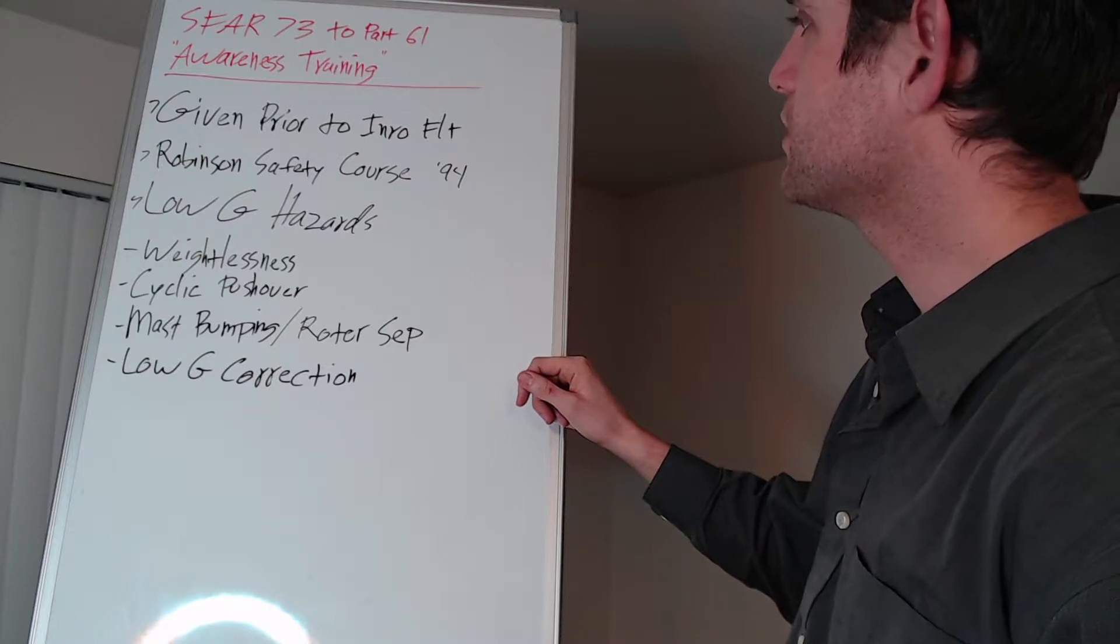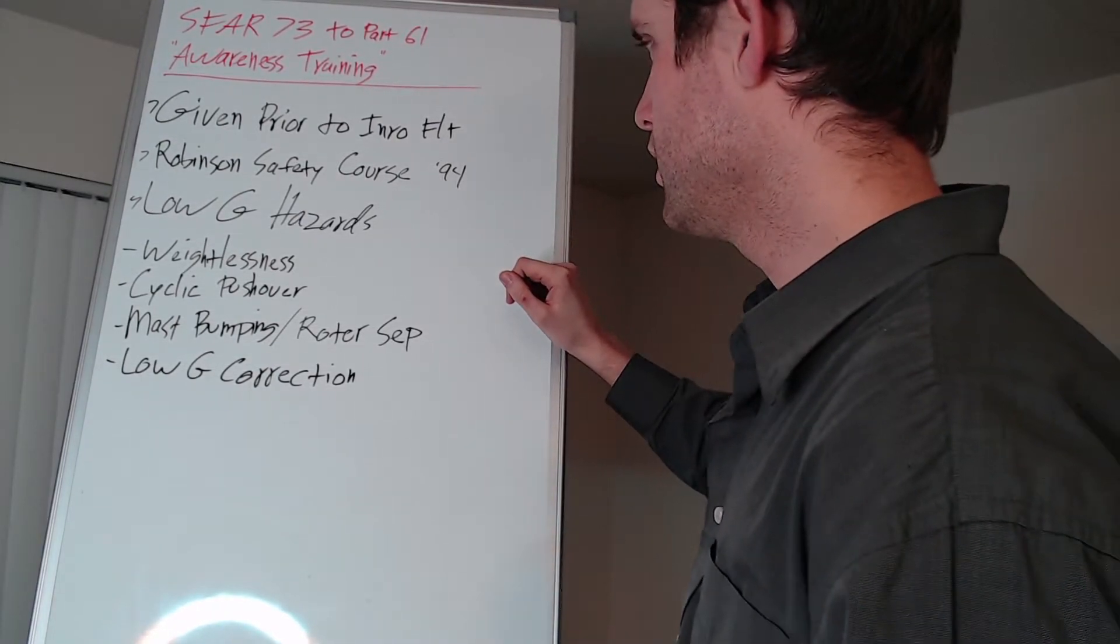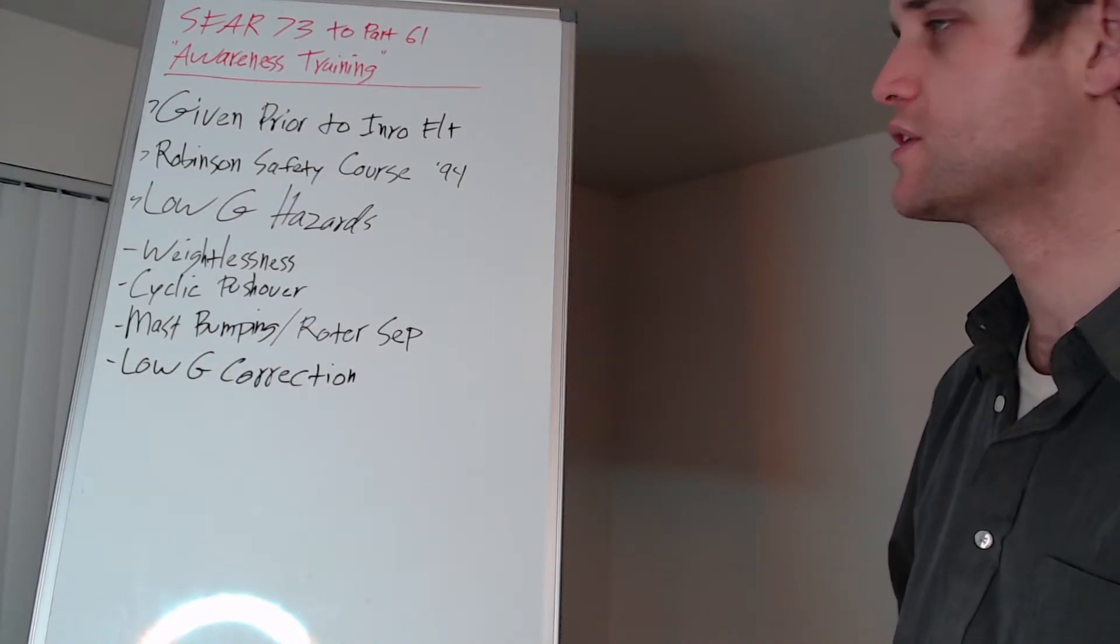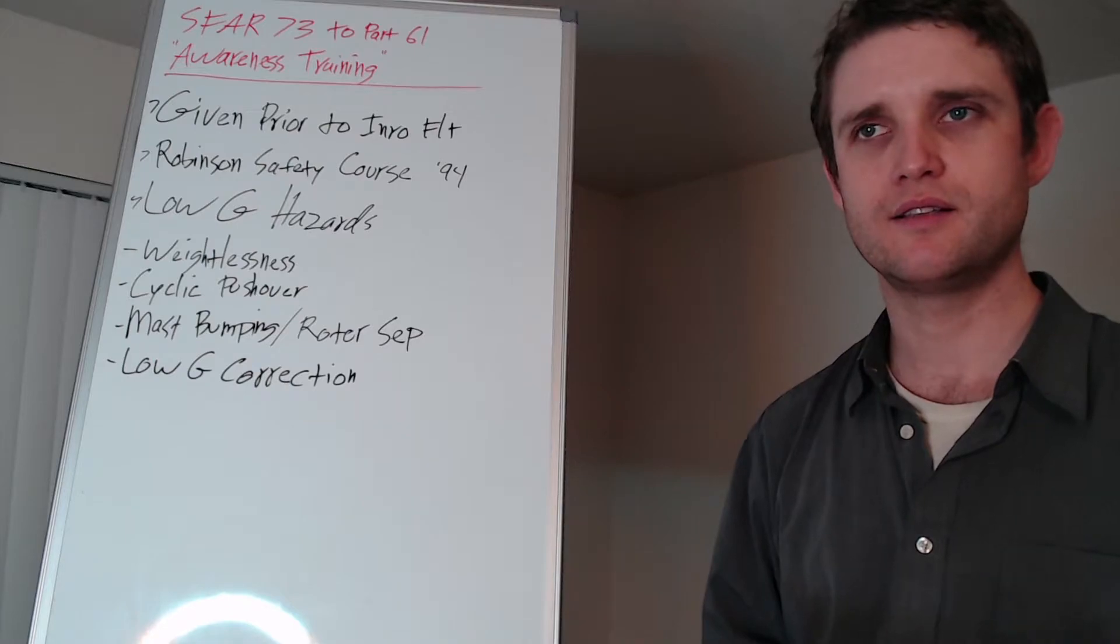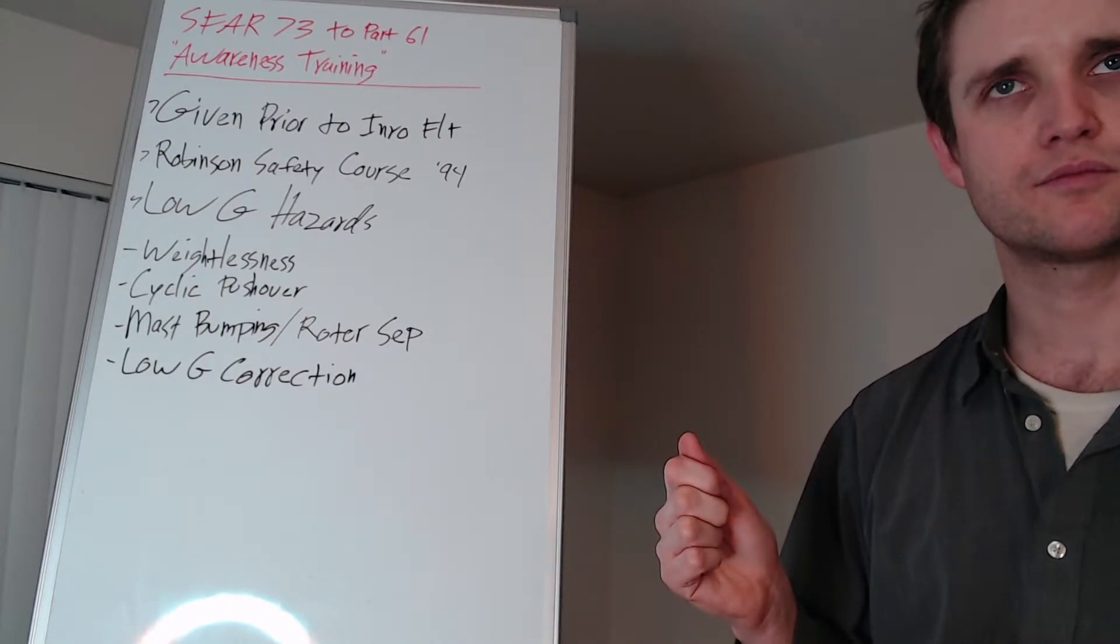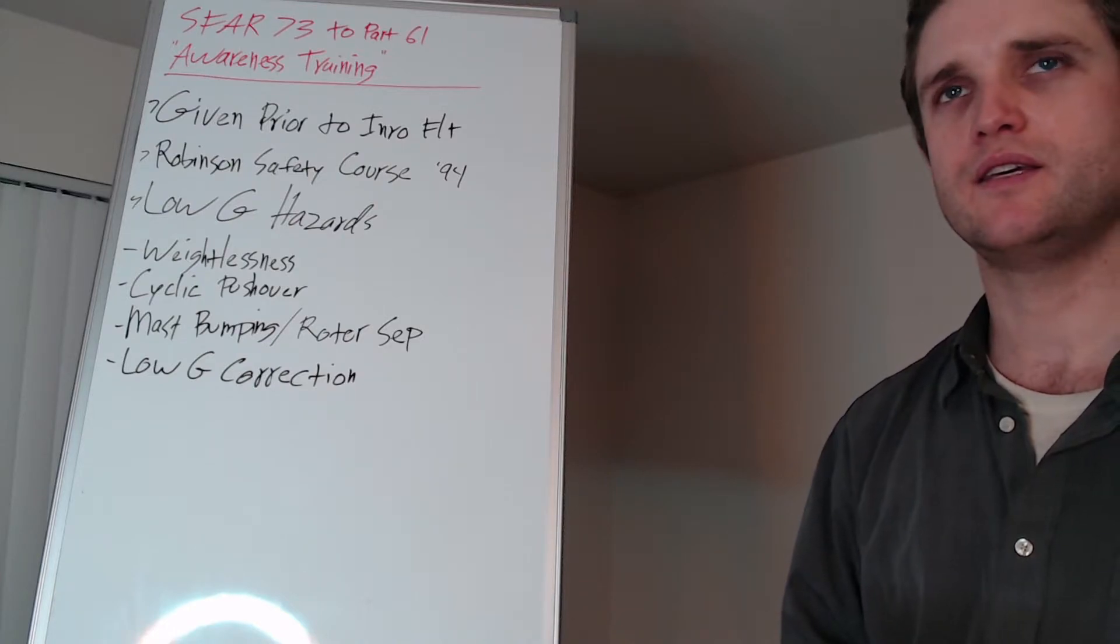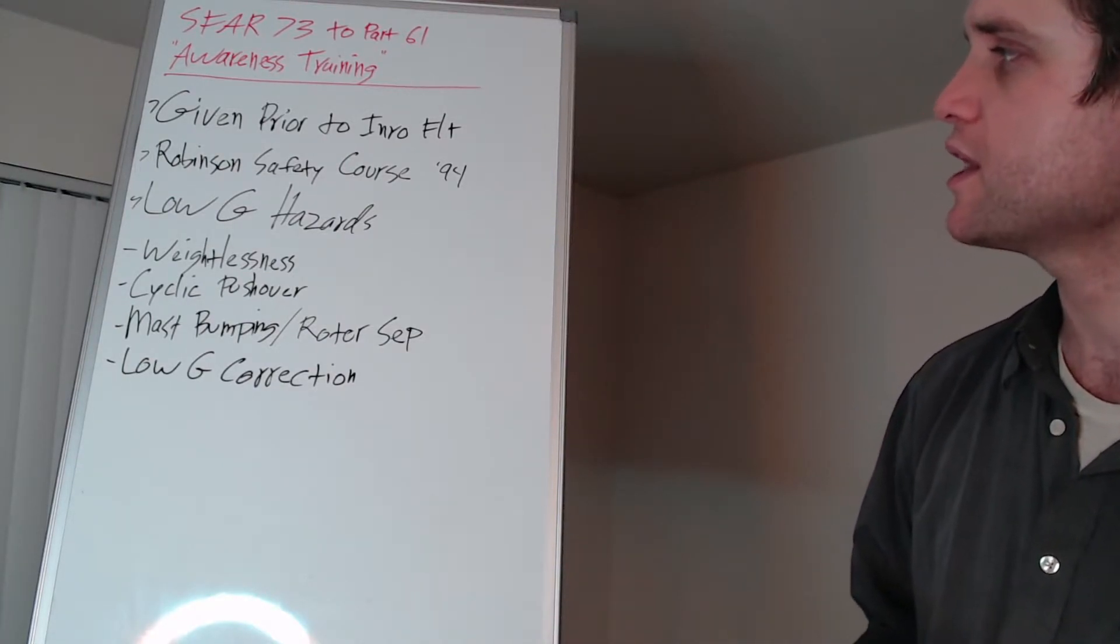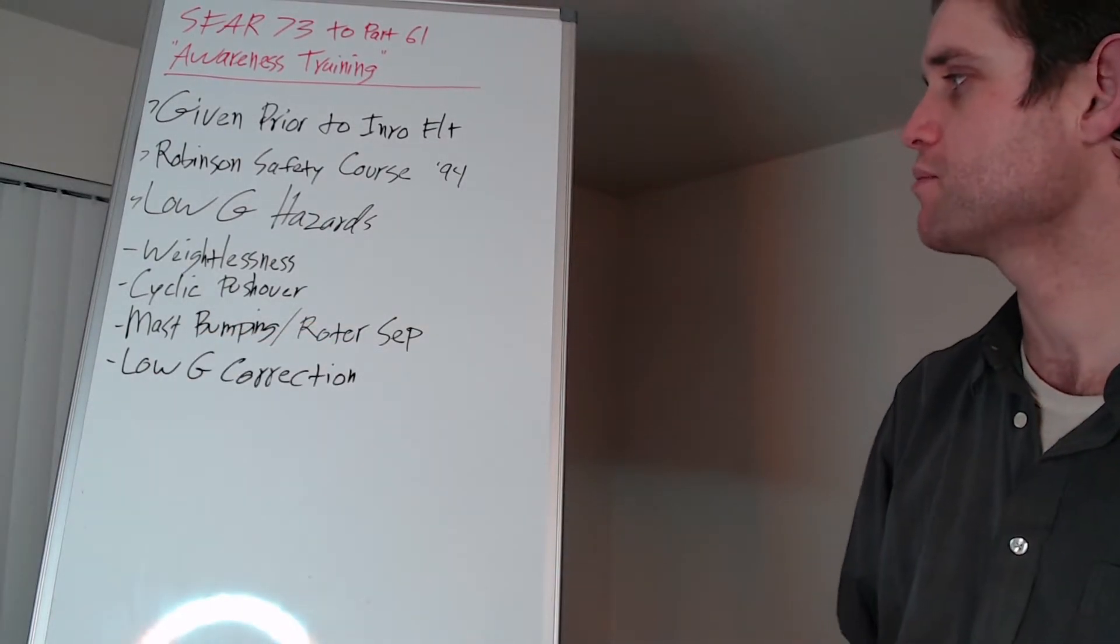There's a few different problems with that when we're talking about flying the R22 or R44 helicopters because of the design of the rotor system. One of the things that can cause that feeling of weightlessness and low G is what's called a cyclic pushover. Low G pushover is where you abruptly and suddenly push the cyclic forward. Because the fuselage in the helicopter is actually free hanging below the rotor system, it will no longer be free hanging if you make this cyclic pushover too abrupt, which can result in the next issue, mass bumping and rotor separation.